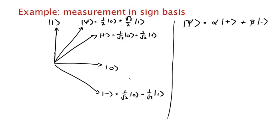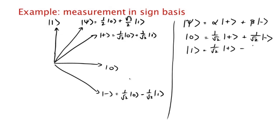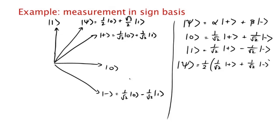So how do we rewrite |ψ⟩ in the |+⟩/|−⟩ basis? Let's rewrite |0⟩ as a linear combination of |+⟩ and |−⟩. You can see that |0⟩ = (1/√2)|+⟩ + (1/√2)|−⟩, because if you add |+⟩ and |−⟩, the |1⟩ component cancels and you get a multiple of |0⟩. Similarly, |1⟩ = (1/√2)|+⟩ − (1/√2)|−⟩. So you can write |ψ⟩ as (1/2)[(1/√2)|+⟩ + (1/√2)|−⟩] + (√3/2)[(1/√2)|+⟩ − (1/√2)|−⟩], and gather terms.